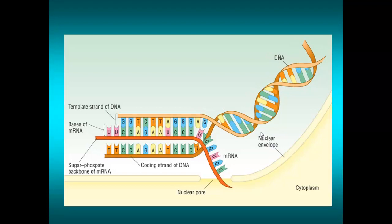This is the OCR-approved image, showing the coding strand and the template strand of DNA. You can see that the bases of mRNA are base-pairing with the template strand of DNA. The coding strand carries the same code as the mRNA — so we get C, C, C, A, A, G, G, and so on up to T. Of course, thymine in DNA is replaced by uracil on RNA.